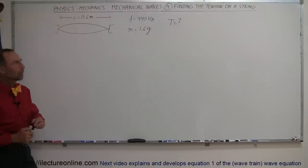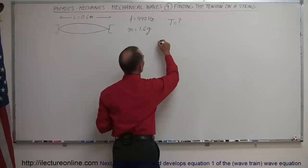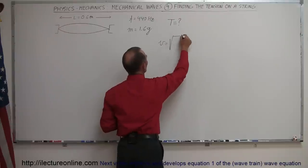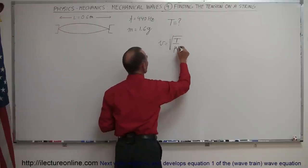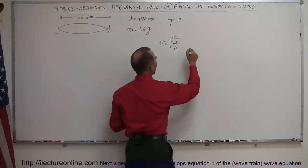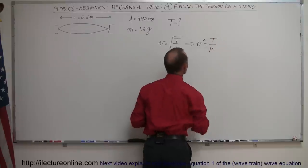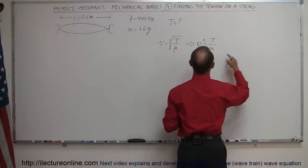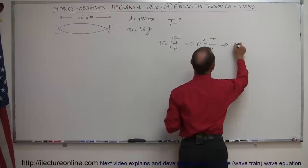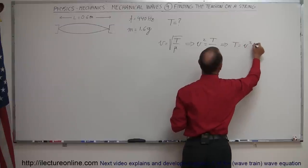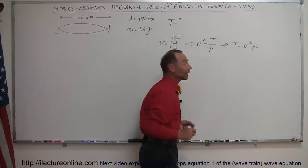So then to use the equation, we know that the velocity is equal to the square root of the tension times the mass per unit length. And then of course we square both sides which means that the velocity squared equals the tension divided by the mass per unit length. And then if we solve that for the tension, we can see that the tension is equal to velocity squared times the mass per unit length.